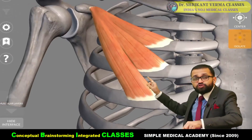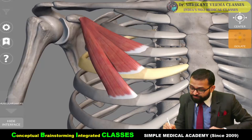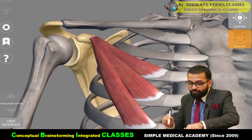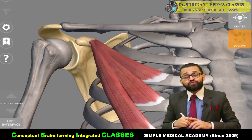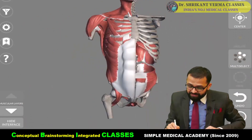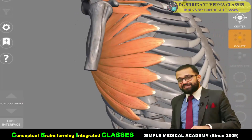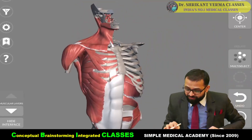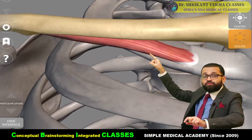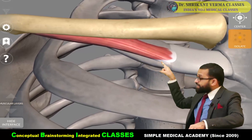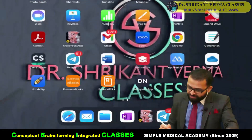When you dissect pectoralis major, you can see another small muscle at the pectoral region — this is pectoralis minor. It takes origin from the 3rd, 4th, and 5th ribs and gets insertion into the coracoid process of the scapula. When it contracts, it pulls the coracoid process forward, causing protraction of the scapula. You can also see the zigzag muscle on the lateral aspect of the thorax — serrated in appearance, migrating to the front, so it is the serratus anterior. And just below the clavicle is the subclavius muscle, taking origin from the first rib.